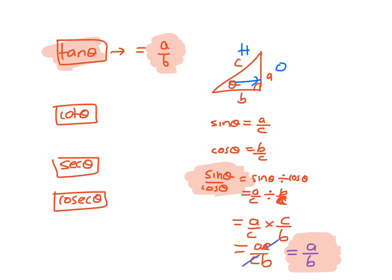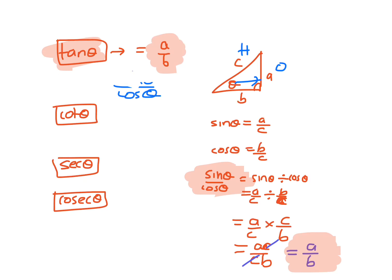So as a rule: tan θ equals sine θ on cos θ.